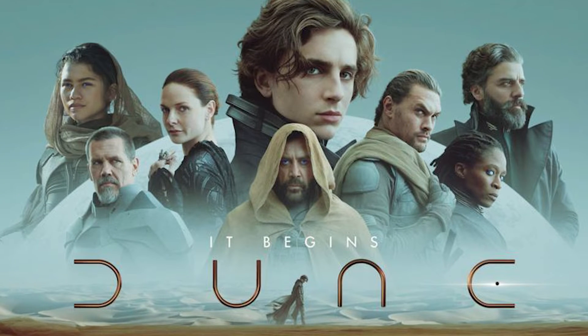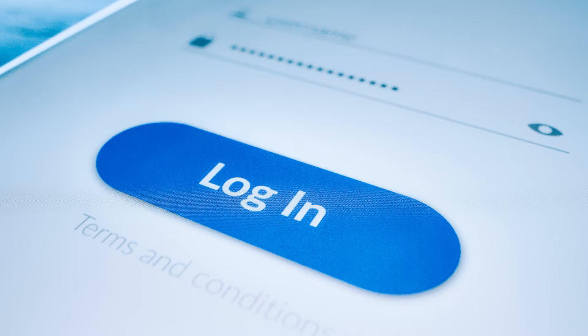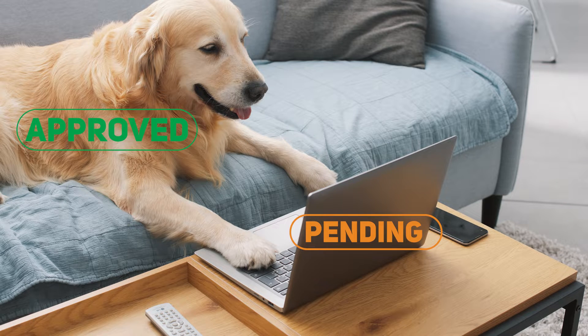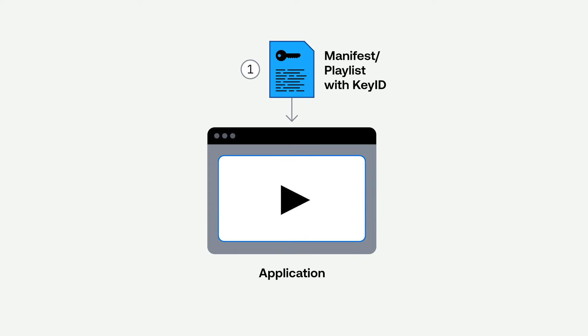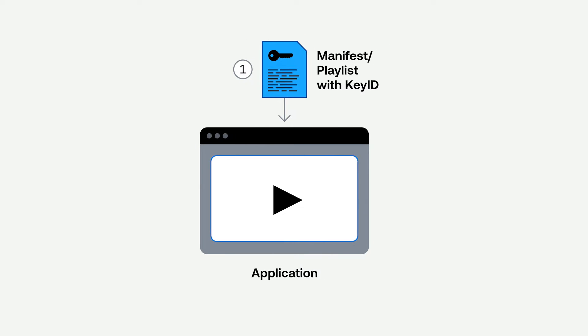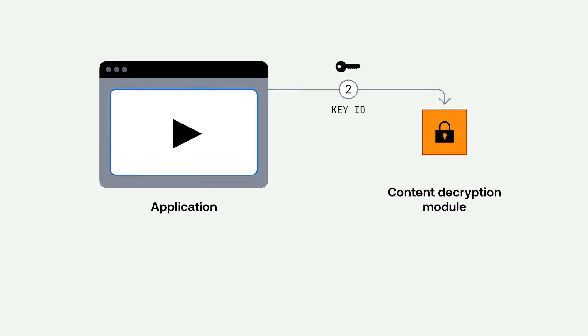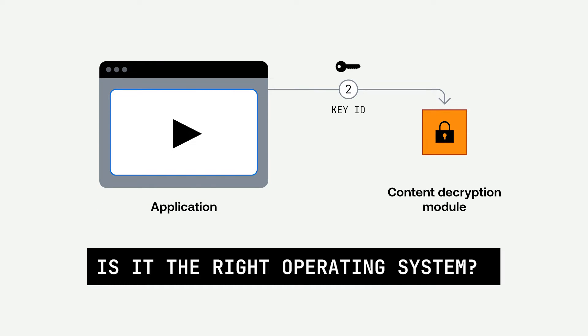Let's say you want to watch Dune this weekend on Max. The first thing you do is log in, find your movie, and click play. This determines if you as the user are allowed to view the content in the first place, but now we have to determine if the device is allowed to play it back. The first thing the player will do when it recognizes that it needs to make a license request is ask the CDM to look at the host machine and determine a couple of factors, like is it the right operating system?